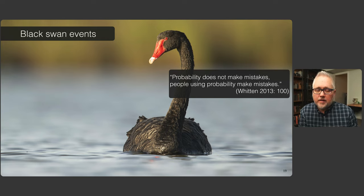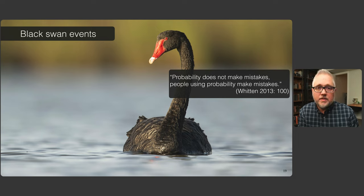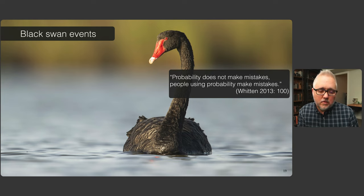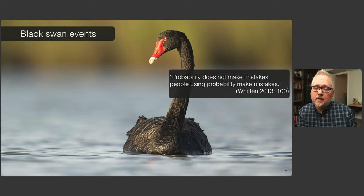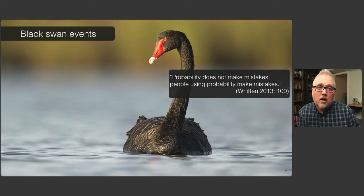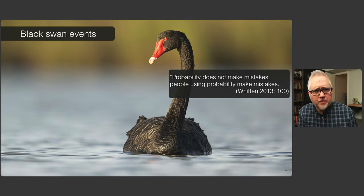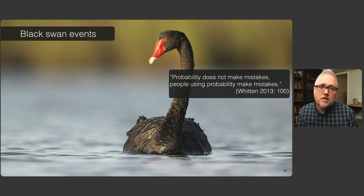People often talk about black swan events, taking that to mean that the models people use to explain average values or central tendency don't apply. However, I think this quote puts it nicely: probability does not make mistakes — people who use probability make mistakes. What we're doing is trying to understand the frequency in which things happen to approximate reality using statistical tools. We will also want to recognize that unlikely events do happen, and things we might have previously thought were unlikely may change if the system that generates those outcomes changes as well.